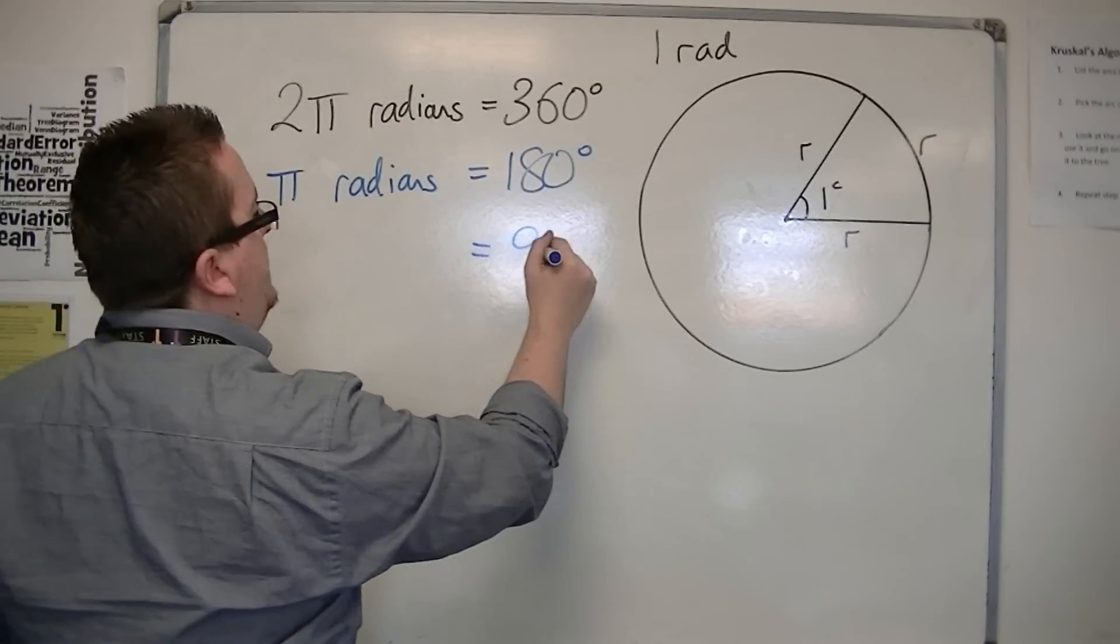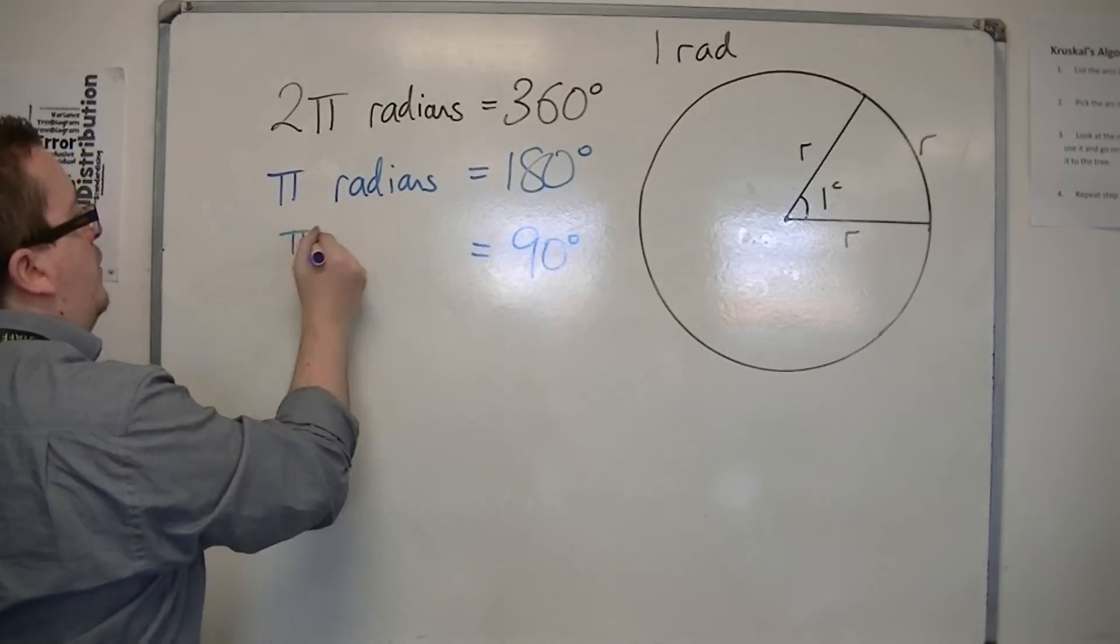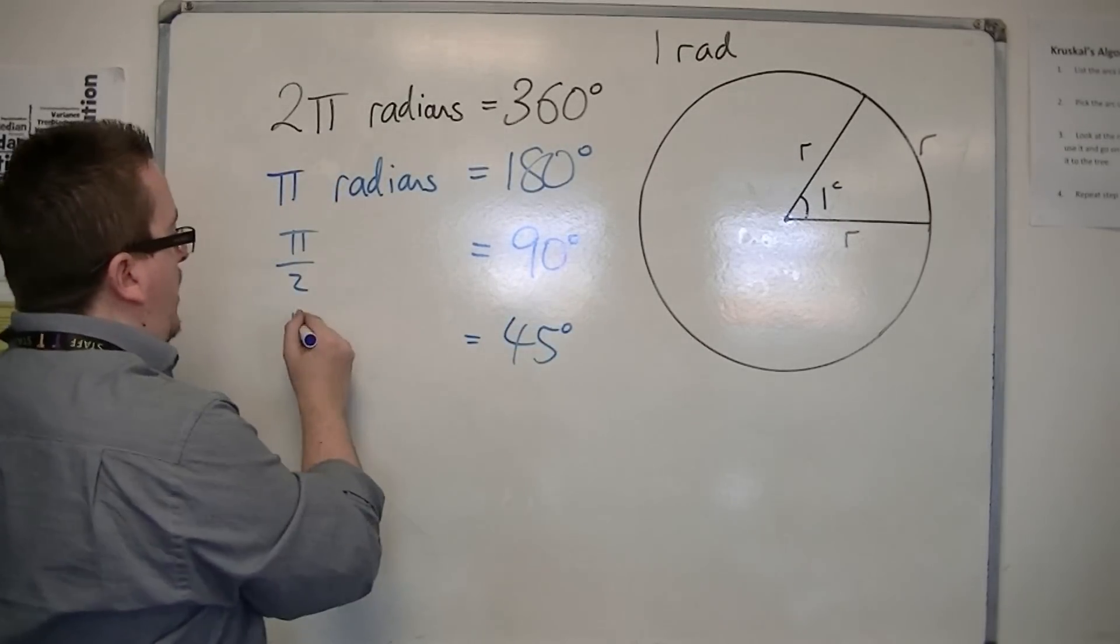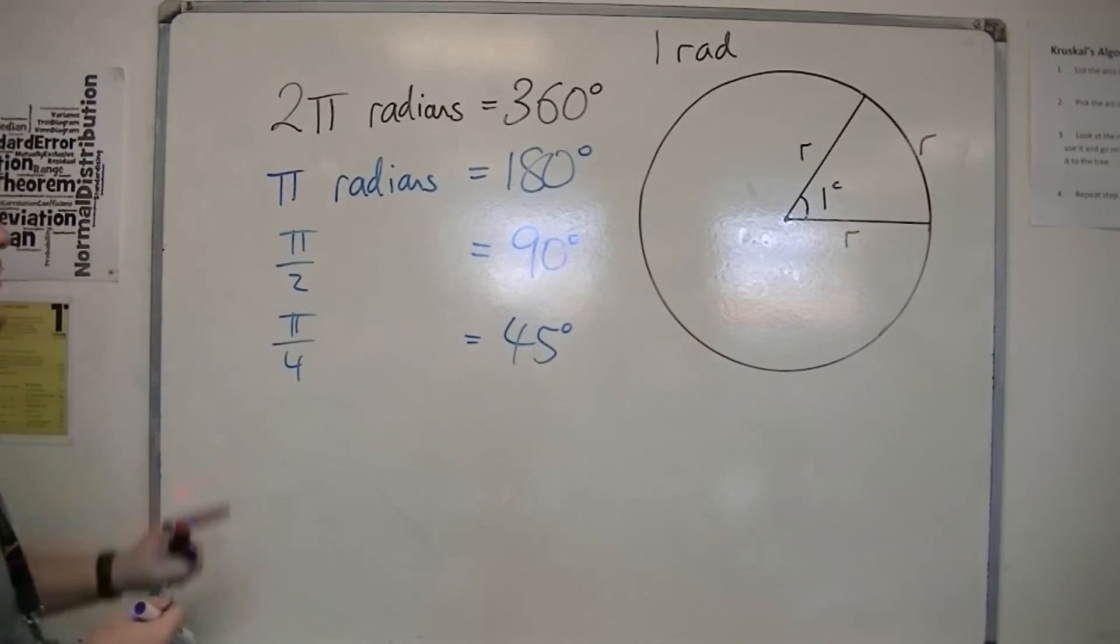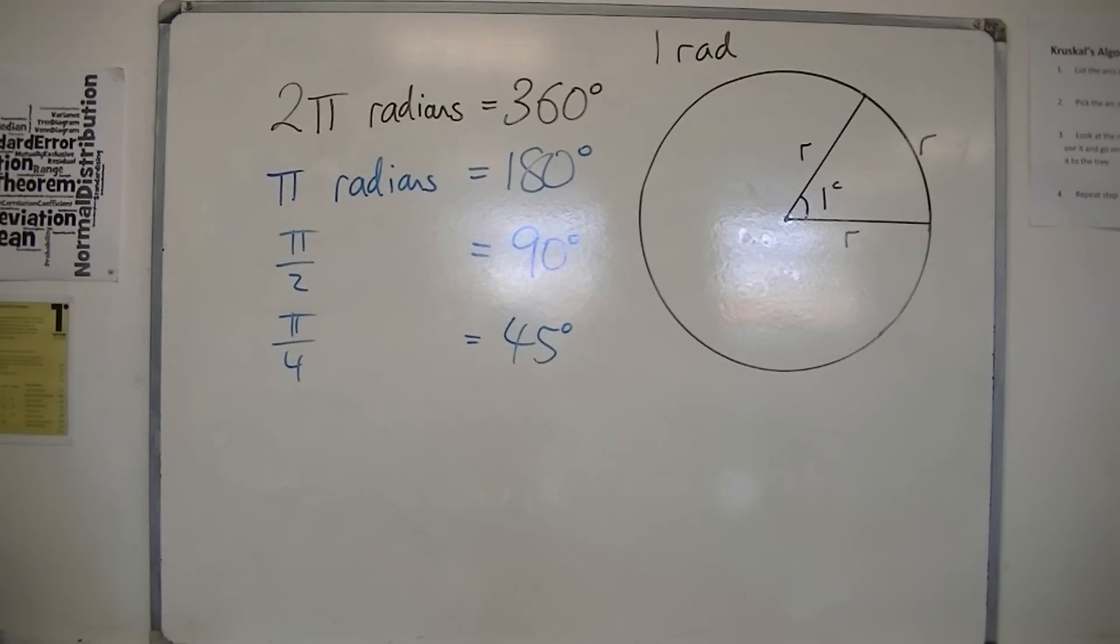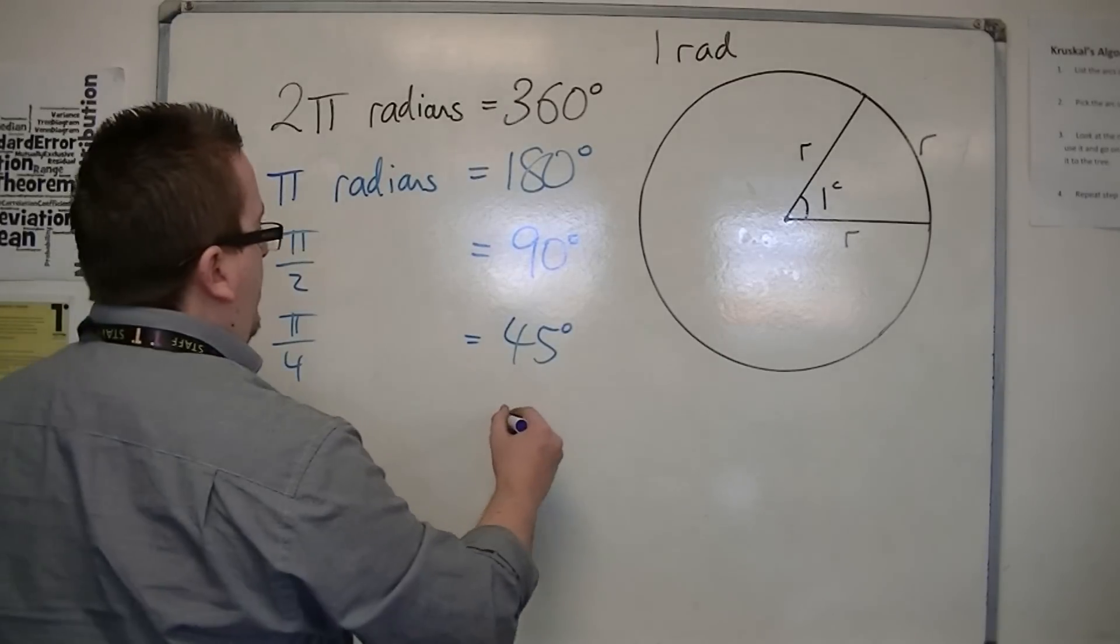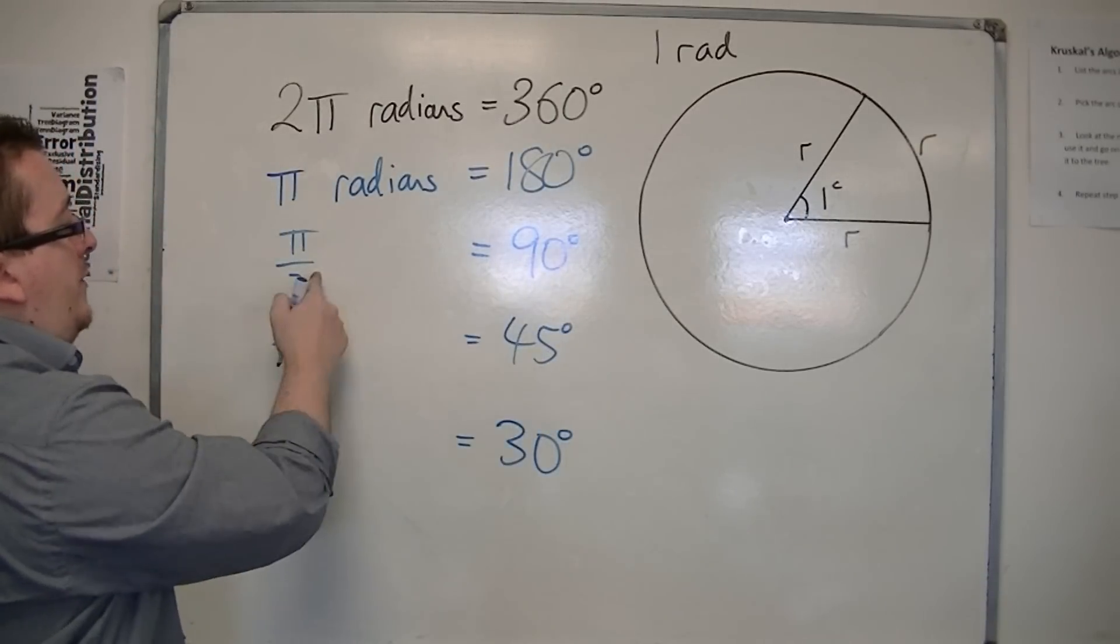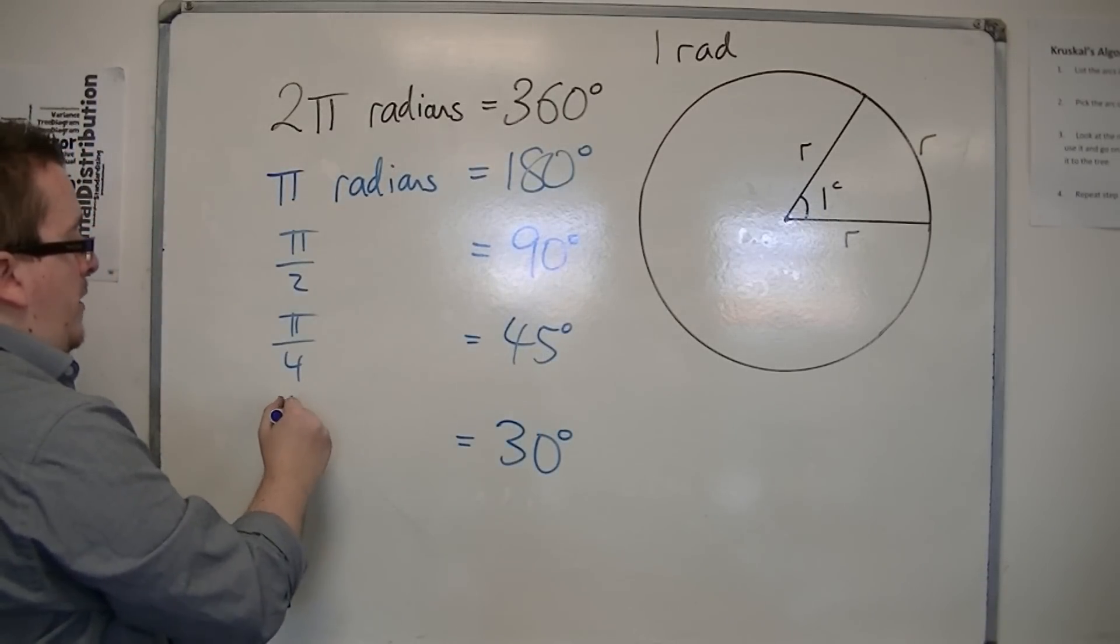So 90 degrees would be pi over 2 radians. So 45 degrees is pi over 4 radians, dividing both sides by 2 each time. Now, if I wanted 30 degrees, well, that's 90 degrees divided by 3, so pi over 2 divided by 3, that's pi over 6.